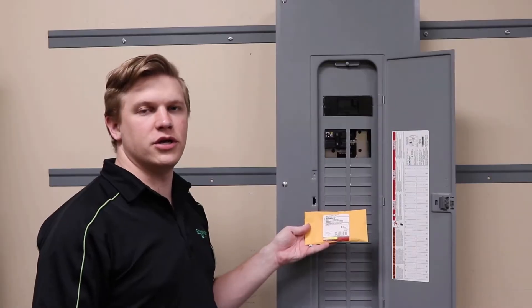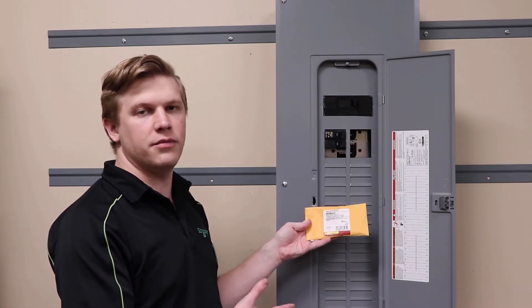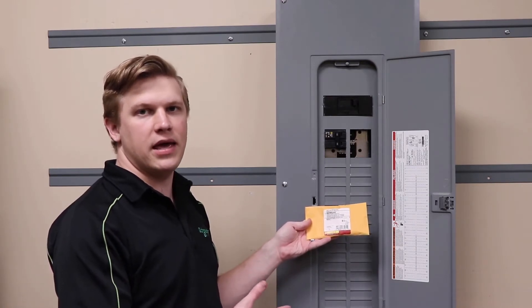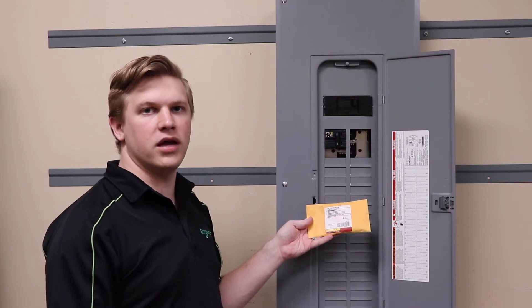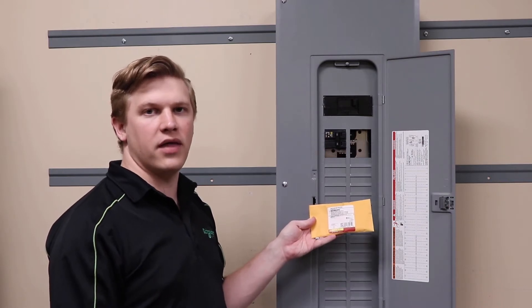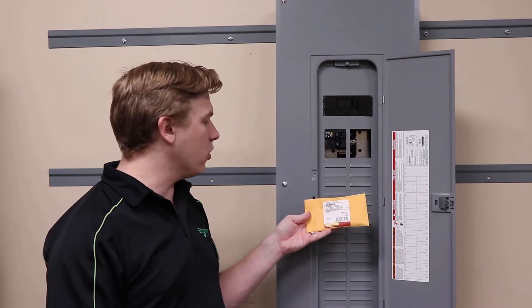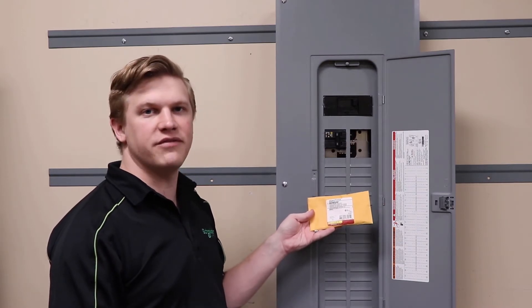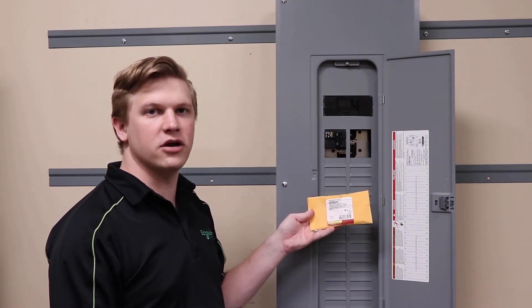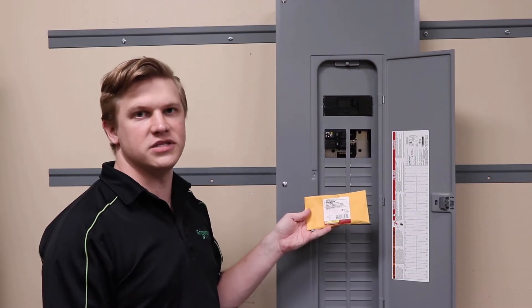In this video we'll show you how to install the HOM 2 PAHA Homeline 2 pole padlock attachment for locking the handles of 2 pole 80 to 125 amp Homeline circuit breakers in the on or off position.